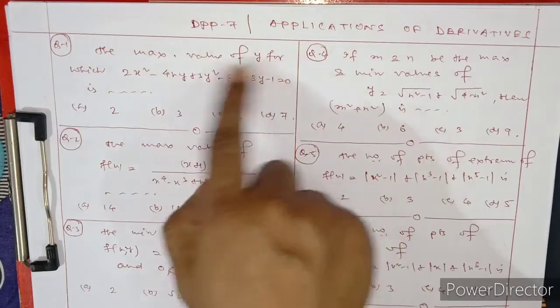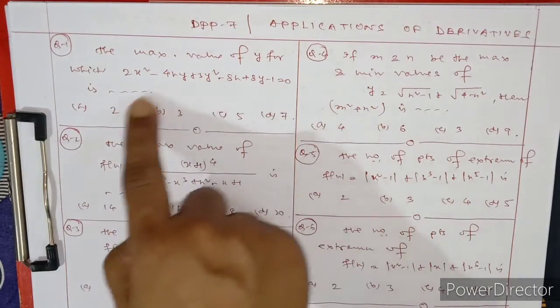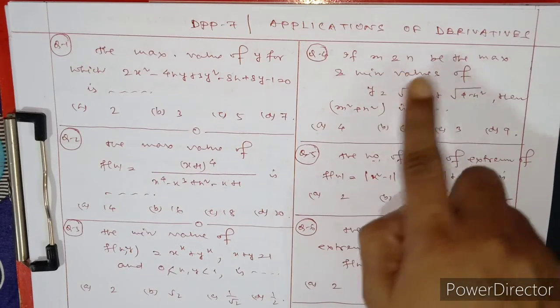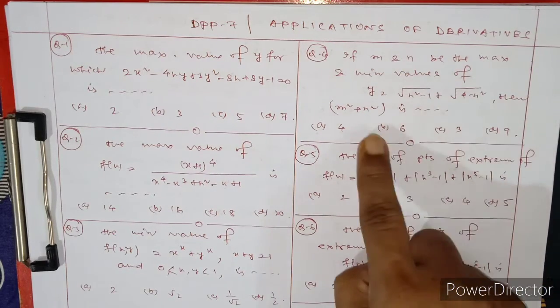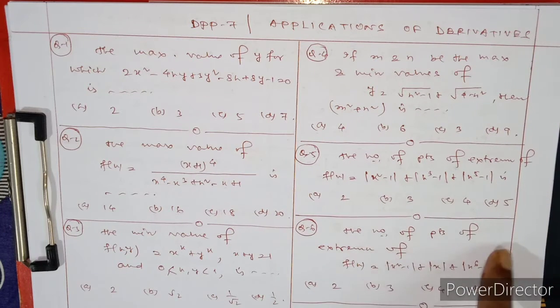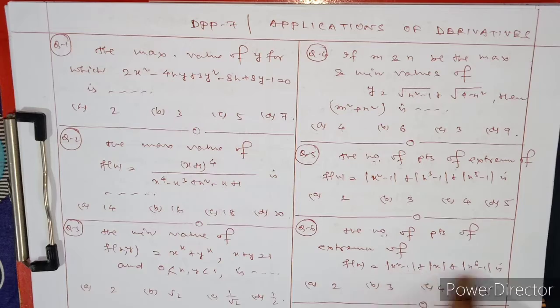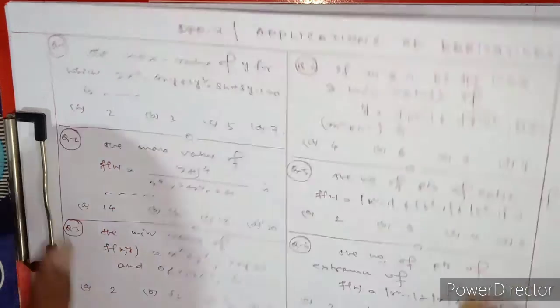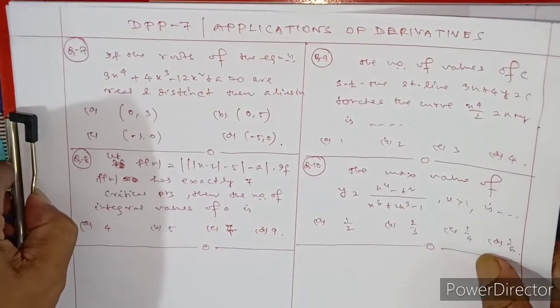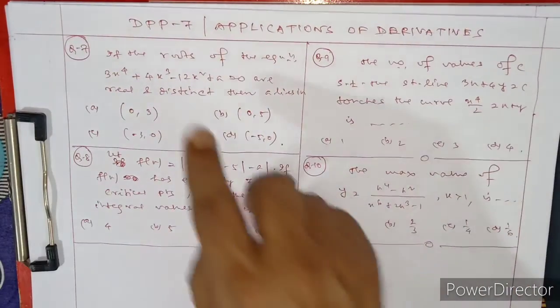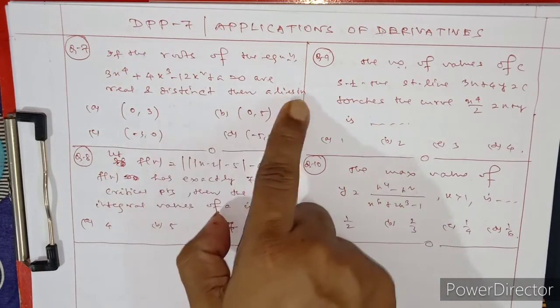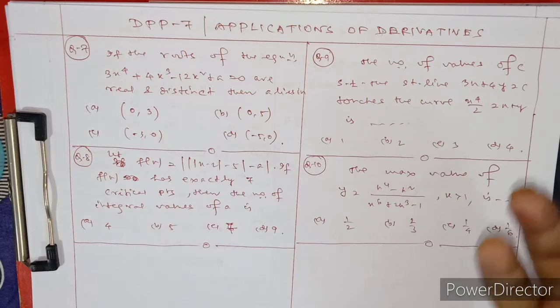Find the maximum value of y for which this equation holds. If M and N are the maximum and minimum values, then find M square plus N square. Find the number of points of extremum of f(x). This is a very good question.